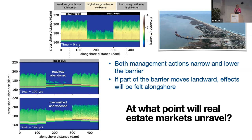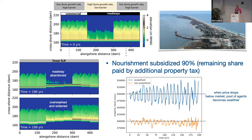We're interested in real estate markets — at what point in this simulation will they unravel? The first case is if the government heavily subsidizes nourishment at 90%, with the remaining 10% financed by local communities. Within Seahome, we assign an imaginary value of $500,000 to oceanfront homes and $400,000 to non-oceanfront homes. Any time the price drops below that market price, the pool of agents becomes wealthier and buys up the cheaper real estate. Each of these oscillations is linked to a different nourishment event and associated erosion.